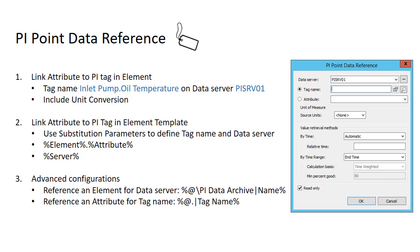Finally, we're going to go through one advanced configuration where we reference an element that contains the name of our PI Data Archive. We'll create that element called PI Data Archive in our AF structure and assign it an attribute called name that holds the name of the PI Data Archive. That way when different users use this AF database from different client machines, it's always going to pull in the same name of the PI Data Archive. Also, the PI Data Archive isn't hard-coded into your PI Point Data Reference, so if it ever changes, the only place you need to change it is in your AF structure.